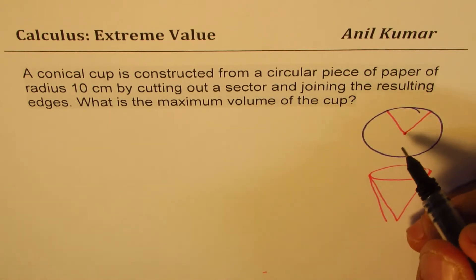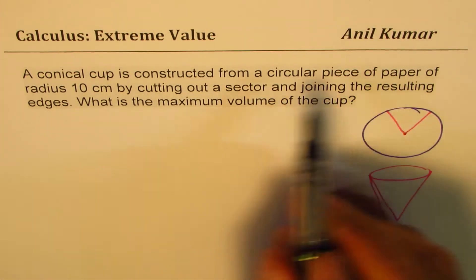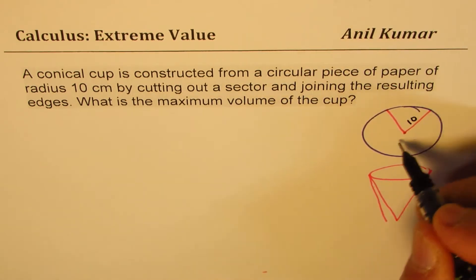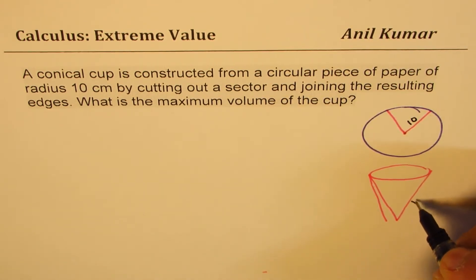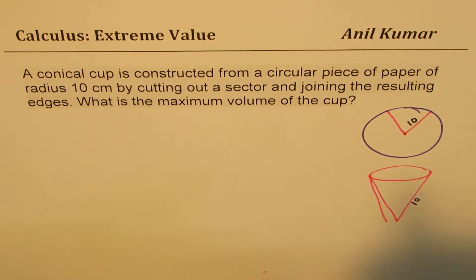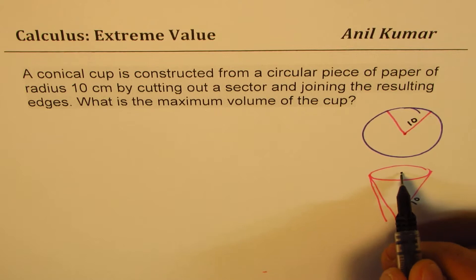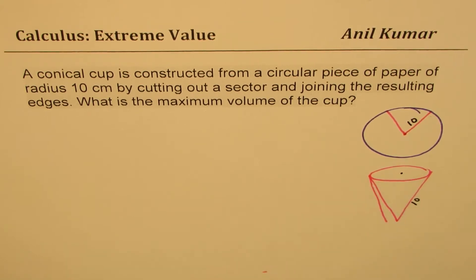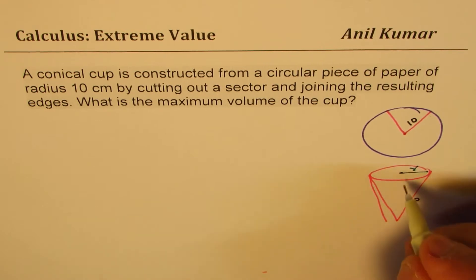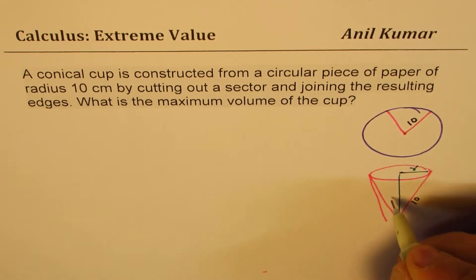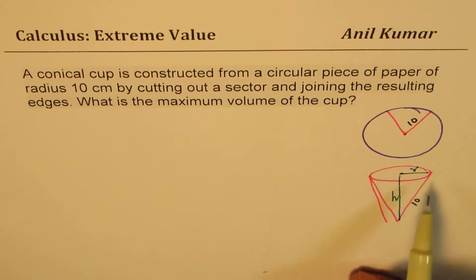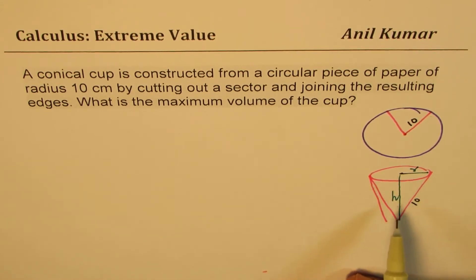Let's say that's the cone. Now in this particular cone, what we are given is that the paper has a radius of 10 centimeters. So this side will be 10 centimeters, which becomes the slant edge of our cone. For different sizes, we don't know what the radius R and height H are going to be — these two things are not known to us.